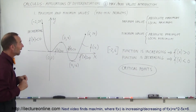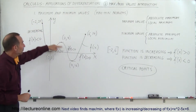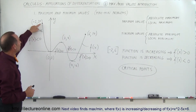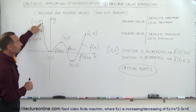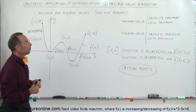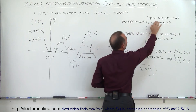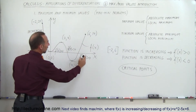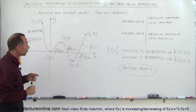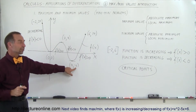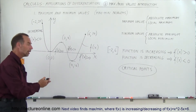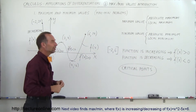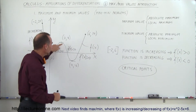Of those five points, the one with the largest y value is the highest point on the interval — we call that the absolute maximum. The absolute maximum is the highest value this function can have on the interval from x equals negative 2 to x equals 6. The lowest value is where y equals negative 6 — that is the absolute minimum point on the interval.